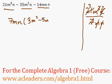Finally, -14mn divided by 7mn will be -2. The m and the m cancel out, and so do the n's.